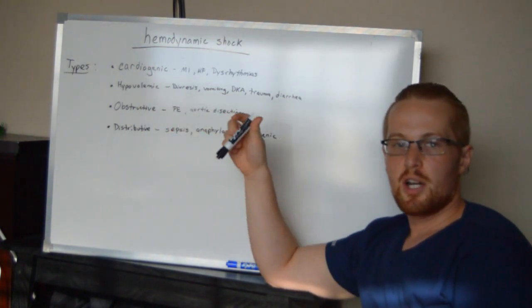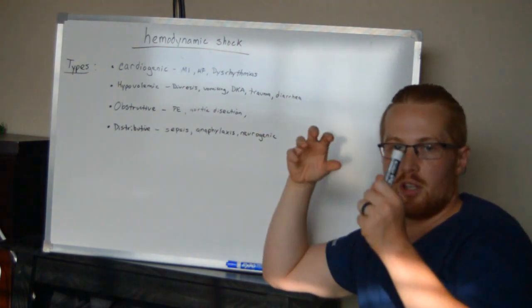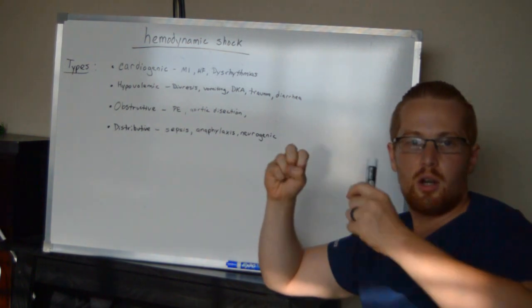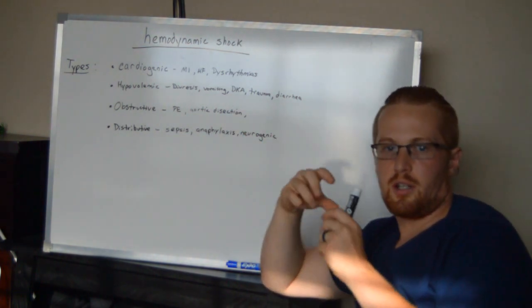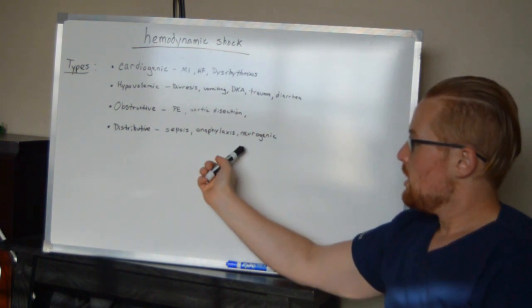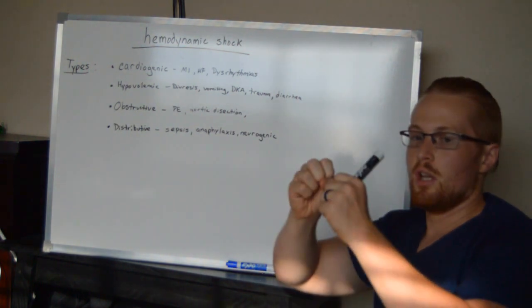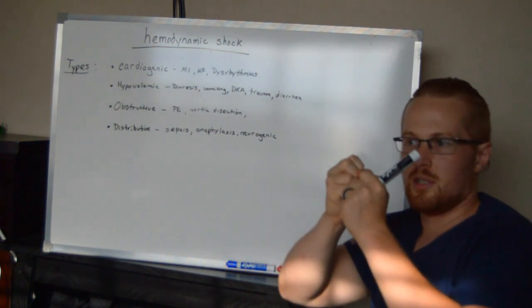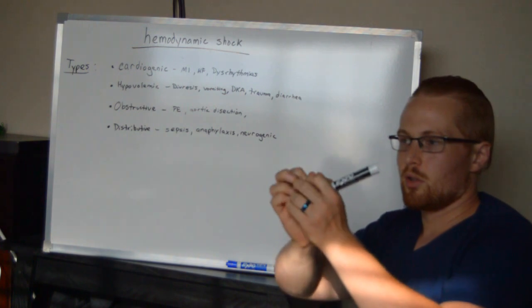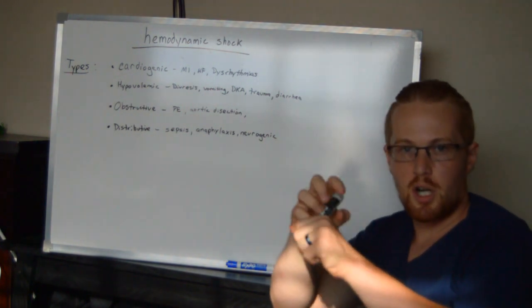Same thing with sepsis. With sepsis, they're trying to fight the wide stream blood infections and so all these mediators going through the body are opening up all the blood vessels and causing lots of inflammation. And neurogenic is a little bit different than these two in that it's not inflammation, per se, it's that the vessels are losing the neurological receptors that are telling the vessels to stay tight to keep the blood pressure high.